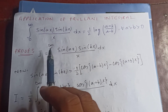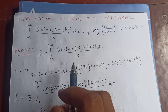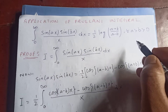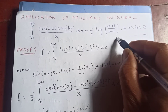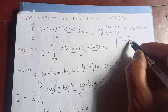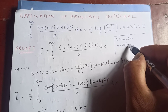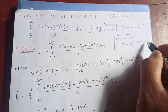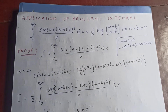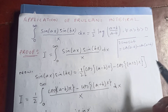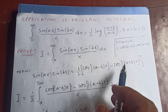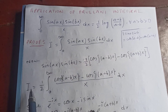Let our integral I be the integral from zero to infinity of sin(ax)·sin(bx) over x dx. Now we know from trigonometry that 2·sin(A)·sin(B) equals cos(A−B) minus cos(A+B). Applying this here, sin(ax)·sin(bx) is half of cos((a−b)x) minus cos((a+b)x).